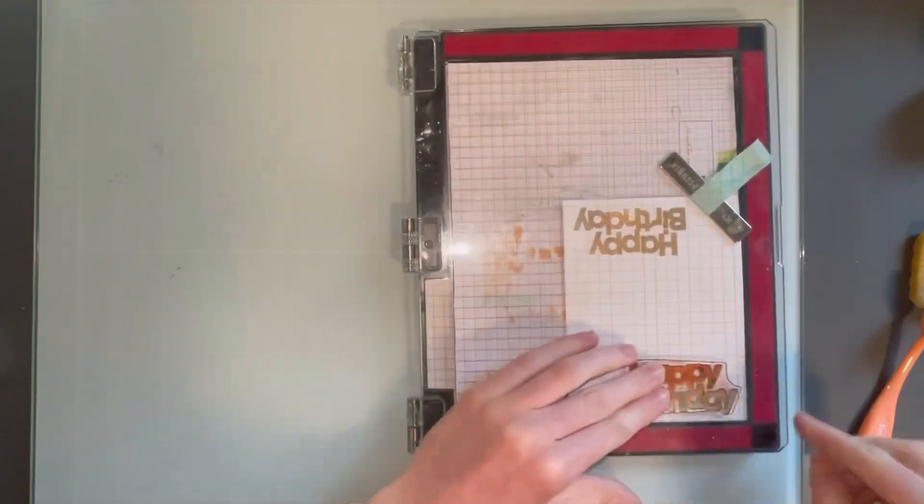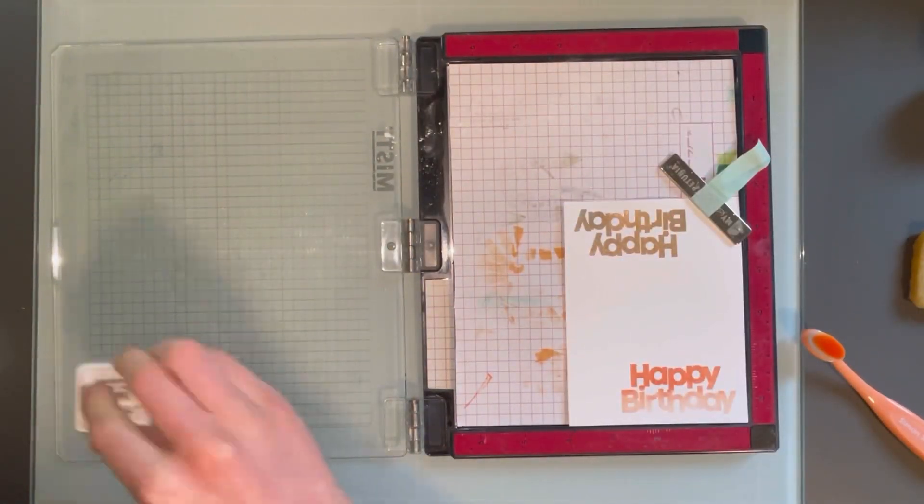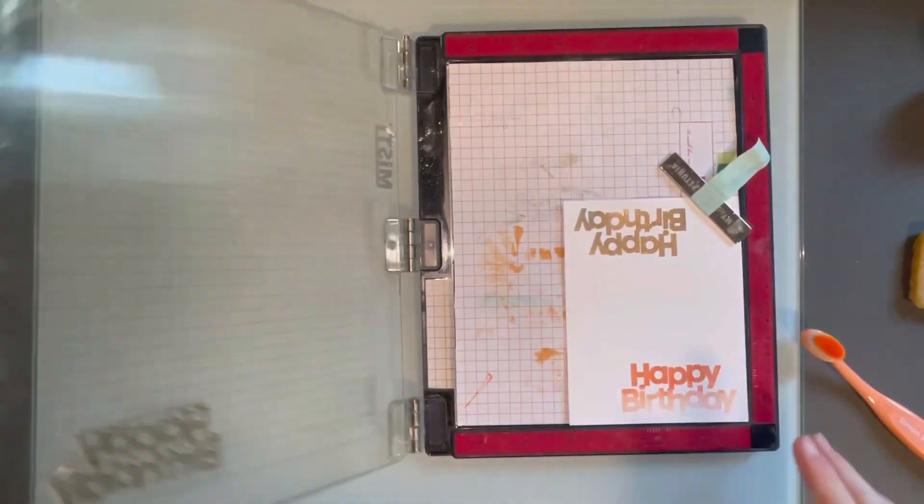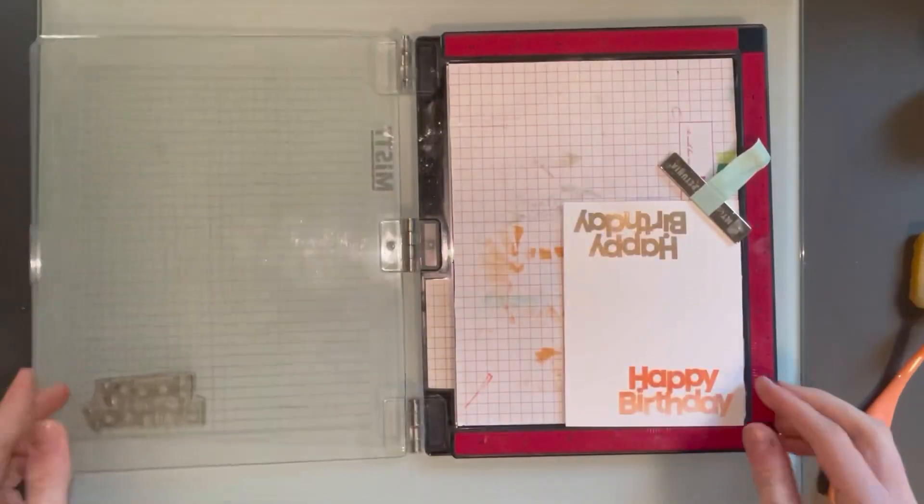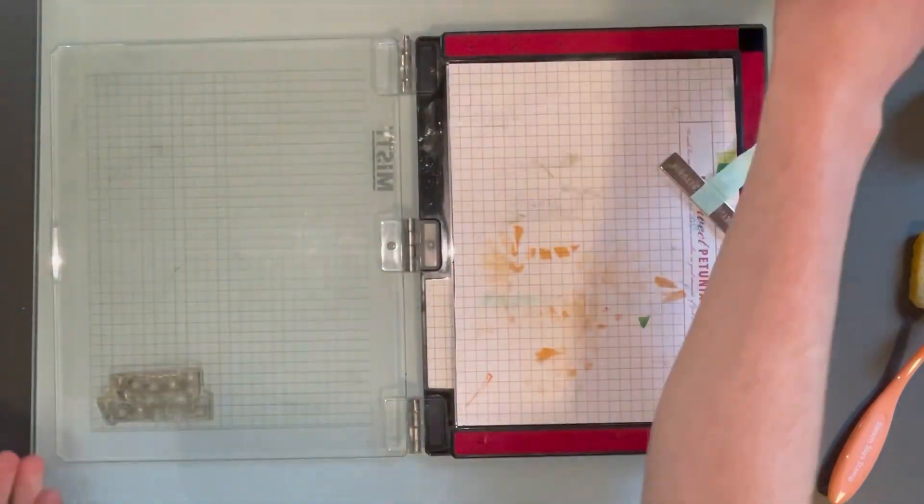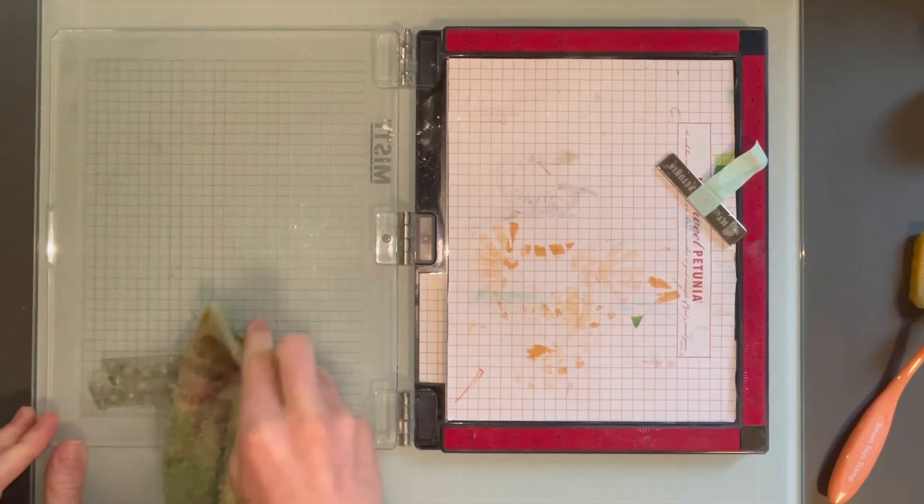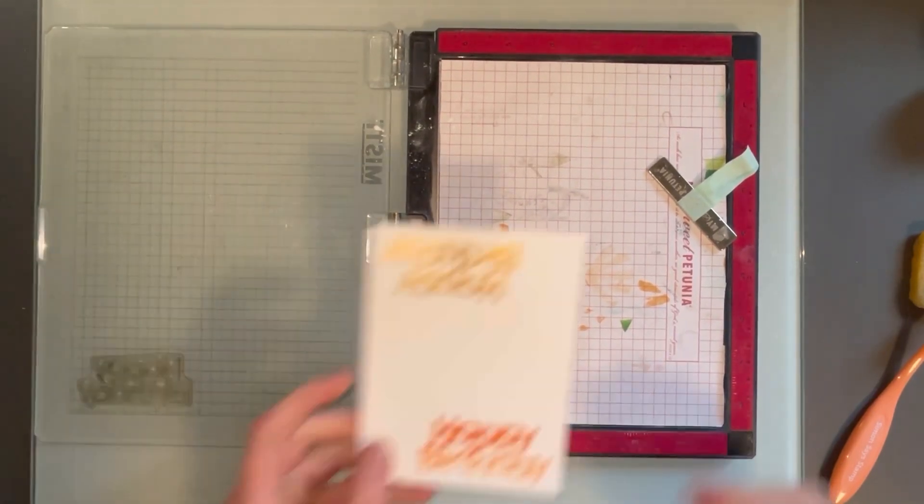You can also use a little paper towel to blot the ink. That works as well if you don't have a blending brush, because blending brushes can be a little bit of an investment. So a paper towel works well for this as well. You can see it gives a really nice blend between the colors and is very beautiful. A great technique.